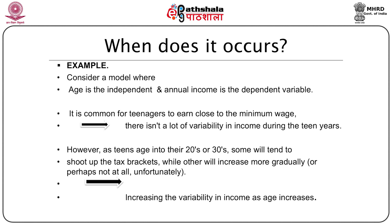When can heteroscedasticity occur? Consider a regression model in which age is the explanatory variable and annual income is the dependent variable. It is common for teenagers to earn close to the minimum wage, so there isn't a lot of variability in income during the teen years. However, as teens age into their twenties or thirties, some will tend to shoot up the tax bracket while others will increase more gradually or not at all. Due to this variation, the variances of the error terms increase with age, causing heteroscedasticity.